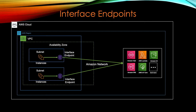Just like when you create an EC2 instance you get a DNS endpoint for that instance, for interface endpoints you also get a DNS endpoint for each ENI. Behind the scenes, AWS creates a Route 53 private hosted zone with A records mapping each DNS endpoint to the IP address of that endpoint. When you make a request to that DNS endpoint, it maps to the IP address, connects internally to the AWS service through the private Amazon network — not the internet.